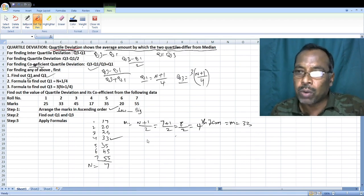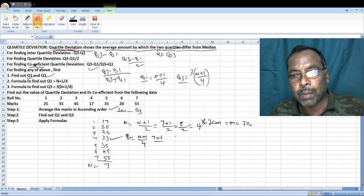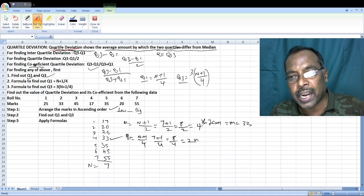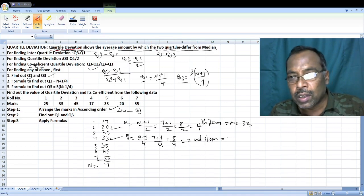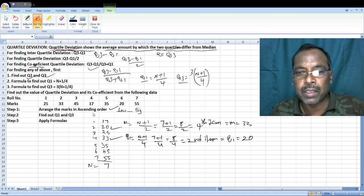Let me find out what is Q1. Q1 is equal to n plus 1 by 4, which is 7 plus 1 by 4 equals 8 by 4, that is equal to 2. That is the second item. Second item comes to 20. So Q1 is equal to 20.